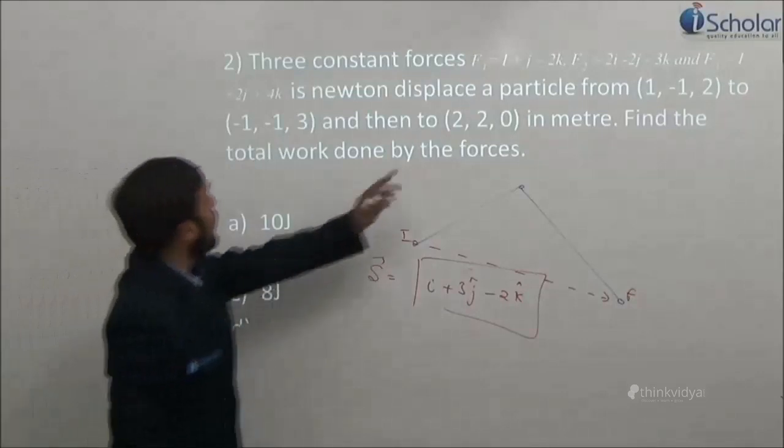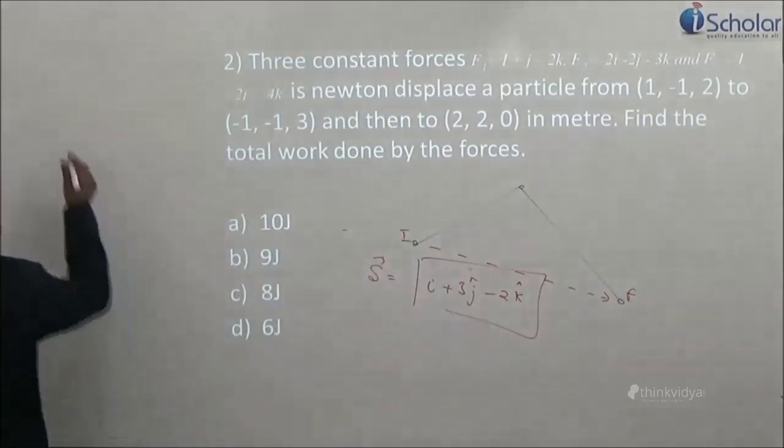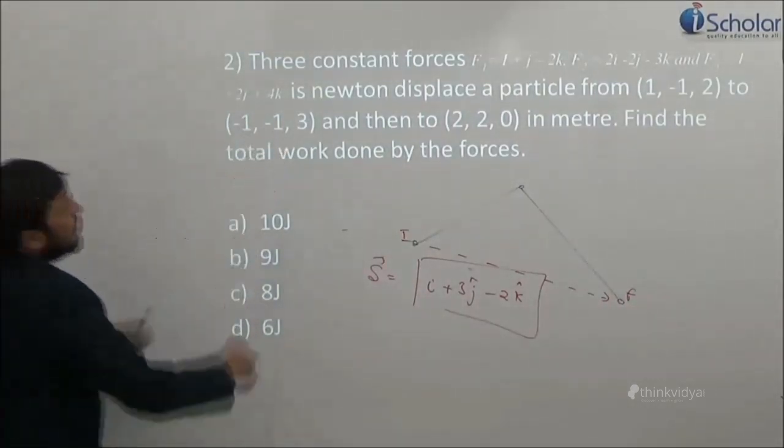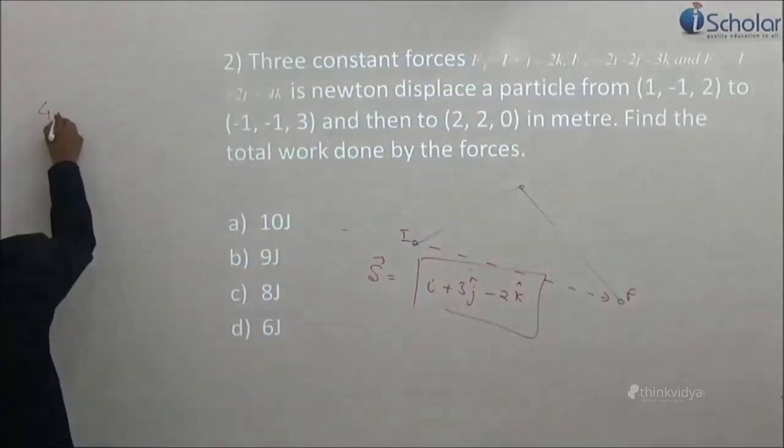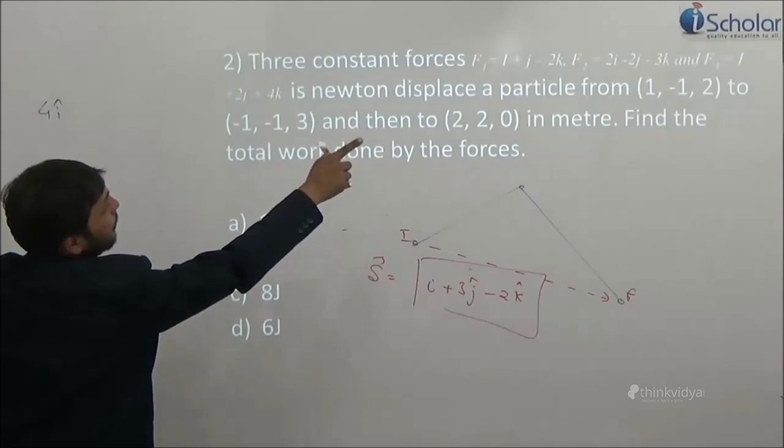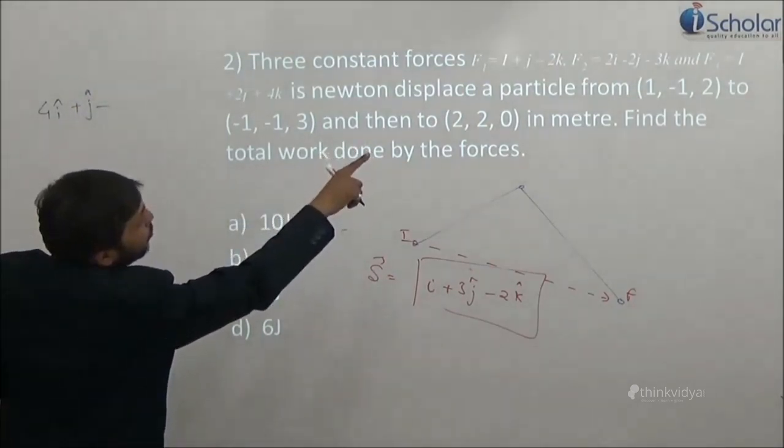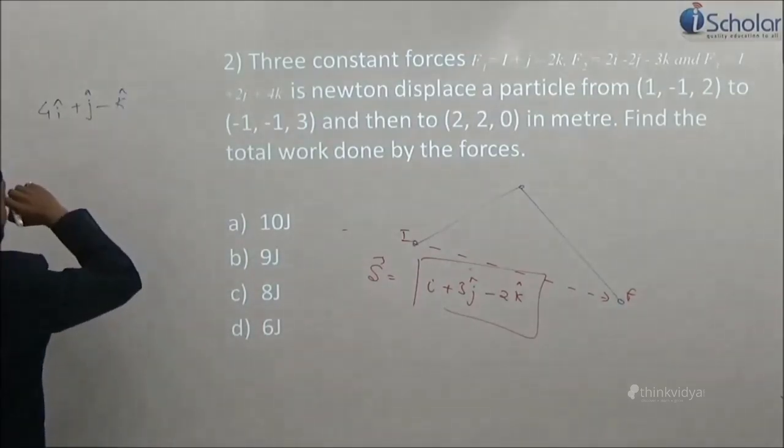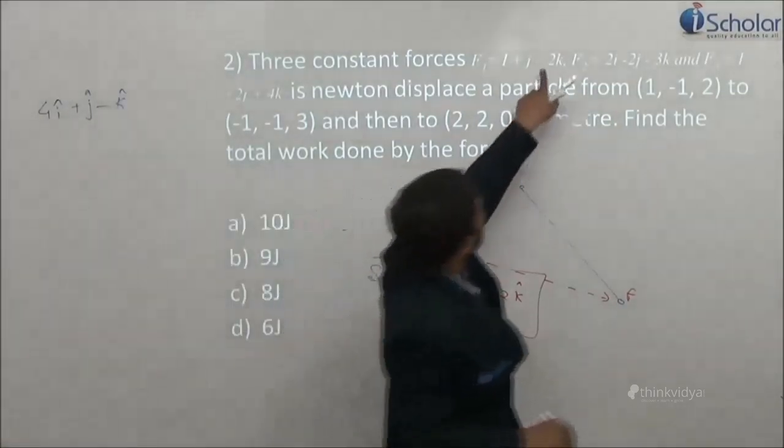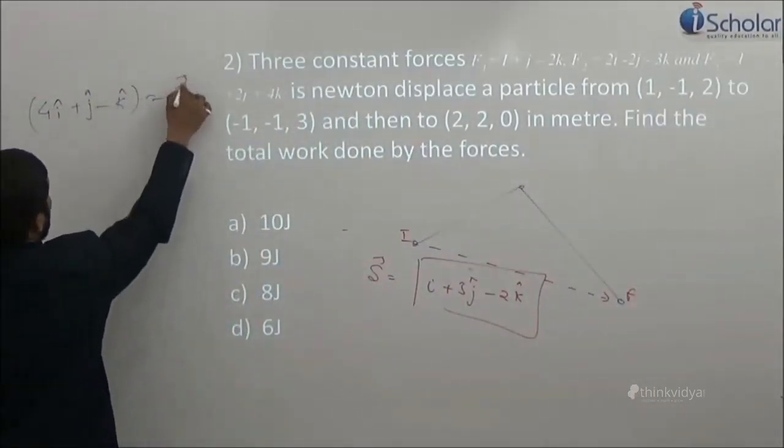So what is the net amount of work done? Net work done will be the net forces. So what is the net forces? Small i, 2i and one more i, so it is 4i. j minus 2j and plus 2j, so plus j. Minus 2k minus 3k and plus 4k, minus k. This and this will bring up minus 5k and this is plus 4k so this is minus k. This is equals to force.